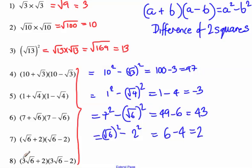The very last question. A plus b times a minus b. 3 root 6 times 3 root 6 is 9 root 36, subtract 2 squared. Root 36 is 6. 9 times 6 is 54, so you get 54 take away 4, which is 50.